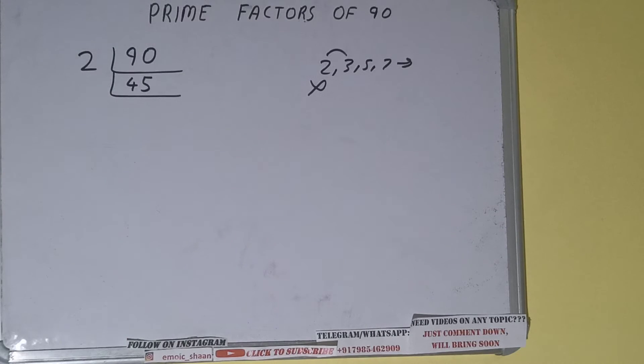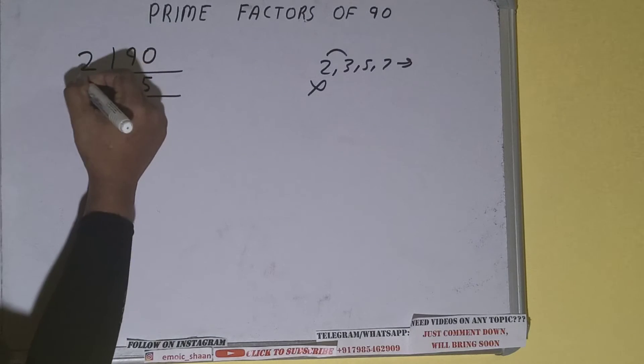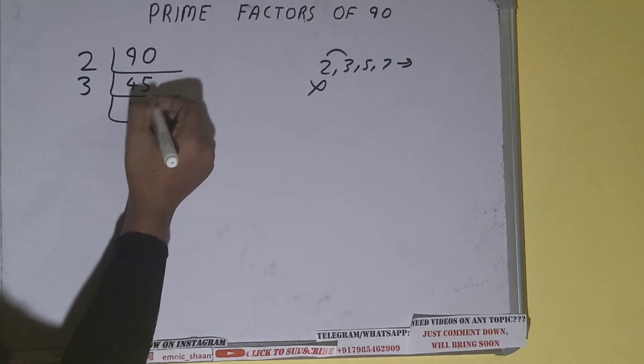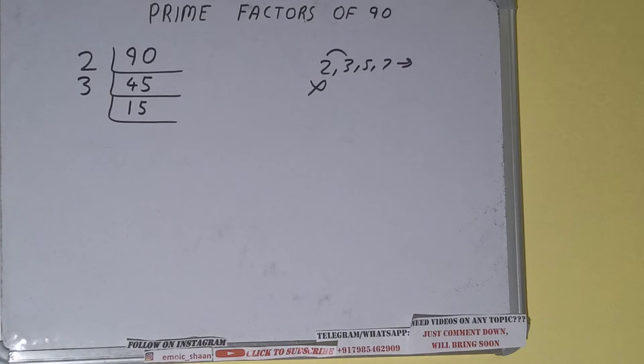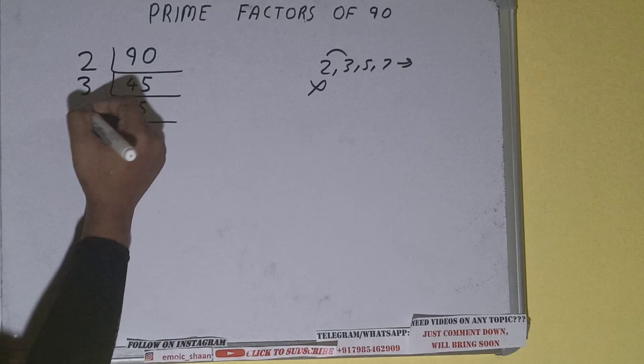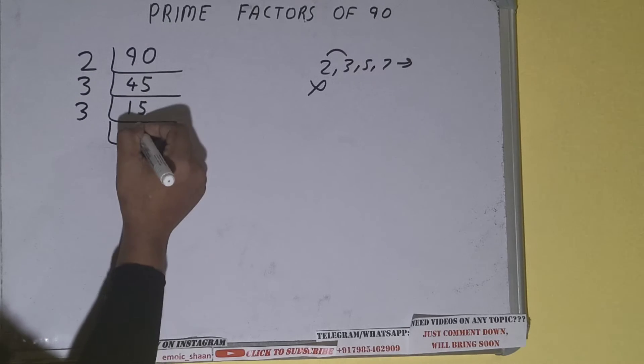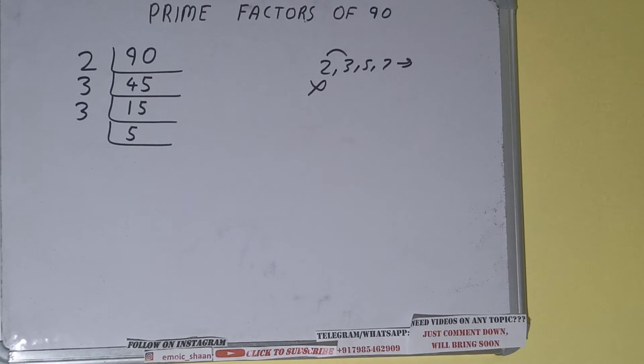So divide it and we'll be having 15. Is 15 further divisible by three? Yes it is, so divide it. We'll be getting 5. Now is this 5 further divisible by three? The answer is no.